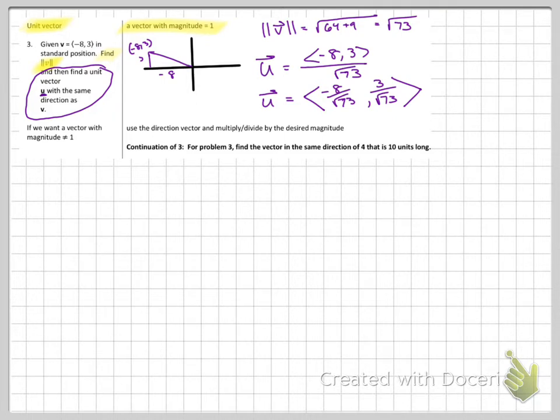If we want a vector with magnitude that doesn't equal 1, so down here, use the direction vector and multiply or divide by the desired magnitude. So they want us to continue number 3, find a vector in the same direction of V that is 10 units long. So remember, U is 1 unit long. It's a unit vector. So if I want, they didn't give me a name. I'm going to call it vector W. To have 10 as its magnitude, I need to multiply my answer by 10. Negative 80 over root 73. 30 over root 73. If you take a vector of magnitude 1 and multiply it by 10, now it's going to have a magnitude of 10.